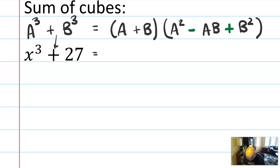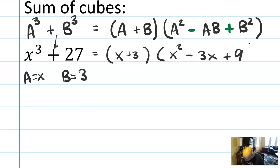But then the signs here are negative, positive. Let's check that pattern. So here my a is x, and my b is the cube root of 27, which is 3. So this should factor into x plus 3, and x² minus 3x plus b², which is 9.